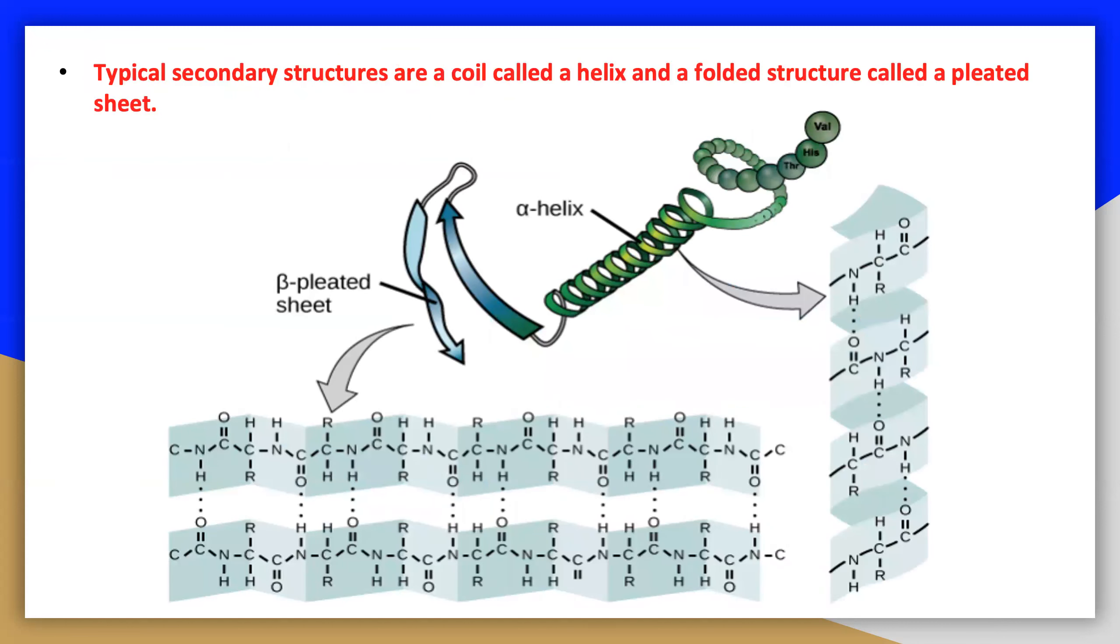The sequence also defines turns and random coils that play important roles in the process of protein folding. Since shape is essential for protein function, a sequence of amino acids gives rise to all of the properties that protein has.